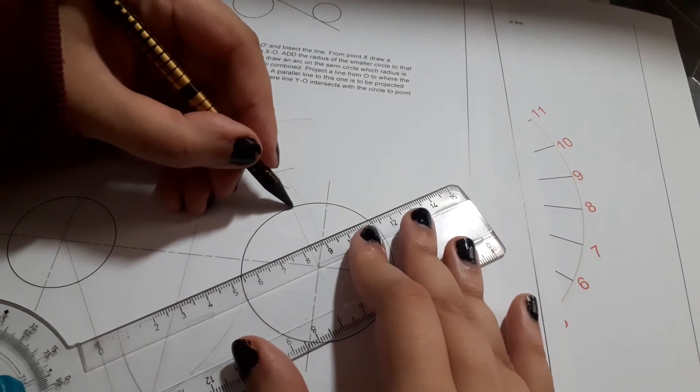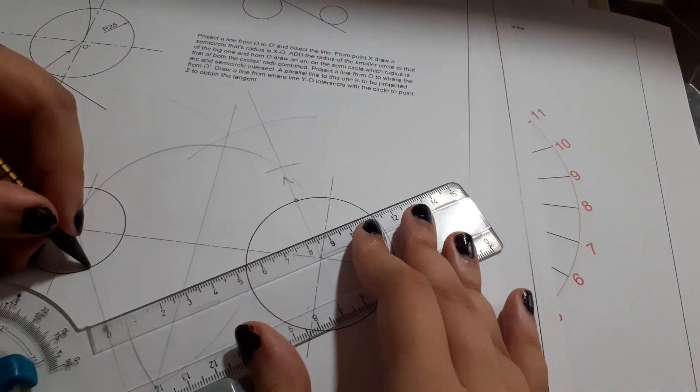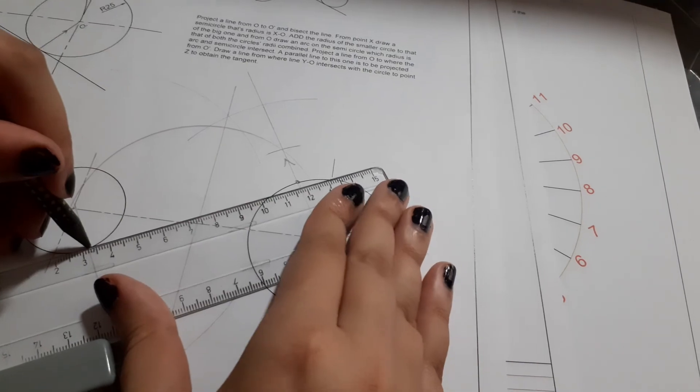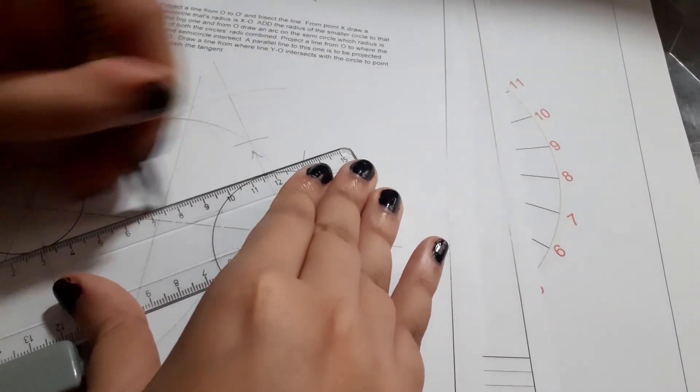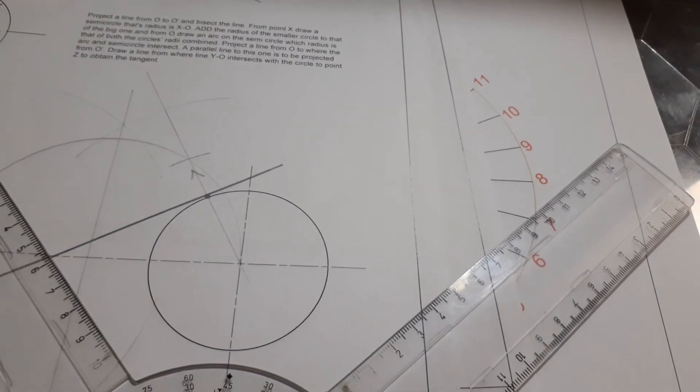Then we join a line from here to here, and we have the tangent between two unequal circles.